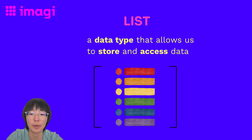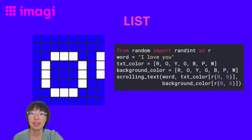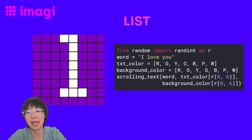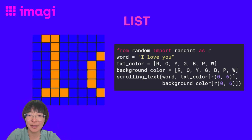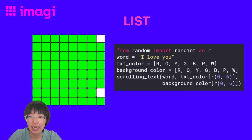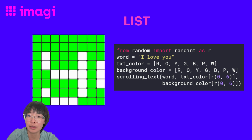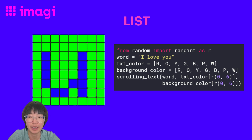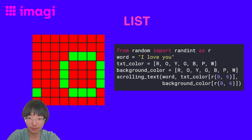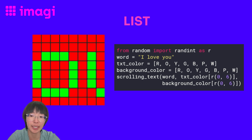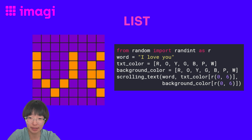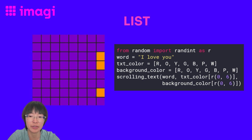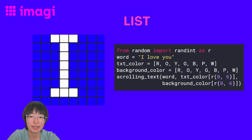We can create a list using square brackets and access data in a list using the number index. Let's look at how we can use lists and the random module to create a scrolling text that says 'I love you' with a random text color and background color each time we run the code. First, I need to import the randint function as R from our random module. Then I assign word to a string that says 'I love you.' Next, I assign text color to a list of colors separated by commas and represented by the capital initial letter of the color name. And I do the same for background color. So now when I call scrolling text with word as the first argument and text color as the second argument — notice I'm using the square bracket to index into our text color list — I want a random number so I can get a random color. Then I do the same for the background color.